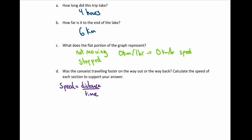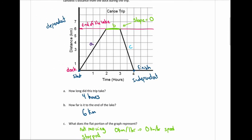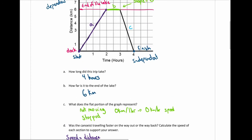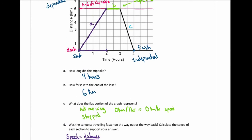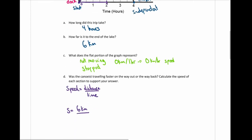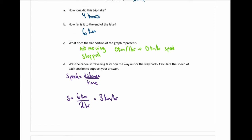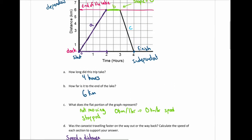For section A, speed equals distance over time. They started at zero and went to six kilometers, so the distance is six kilometers. The time goes from zero to two hours, so it took two hours to go six kilometers. That simplifies to three kilometers per hour. For the flat portion B, they travel zero kilometers in one hour, so speed is zero kilometers per hour.